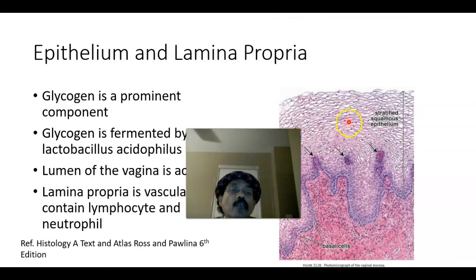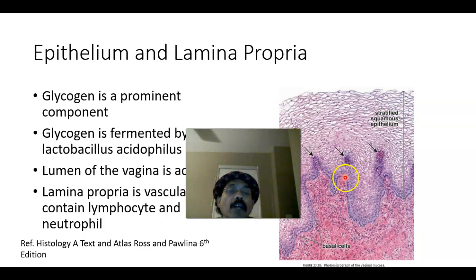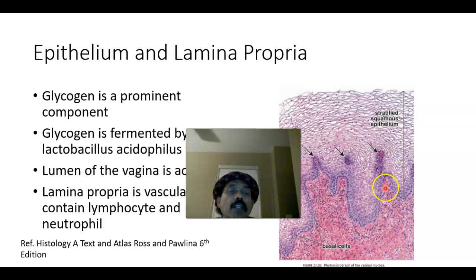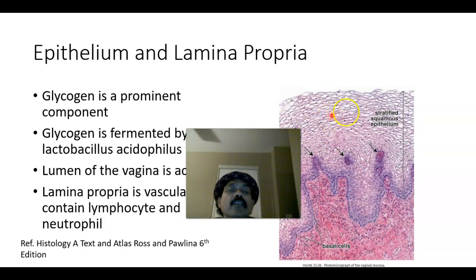The stratified squamous non-keratinized epithelium is protruded by the lamina propria, which makes the sub-epithelial papillae. These are protrusions of the lamina propria. The cells of the stratified squamous non-keratinized epithelium appear empty, but they are not — they contain glycogen, and glycogen formation is stimulated by estrogen.